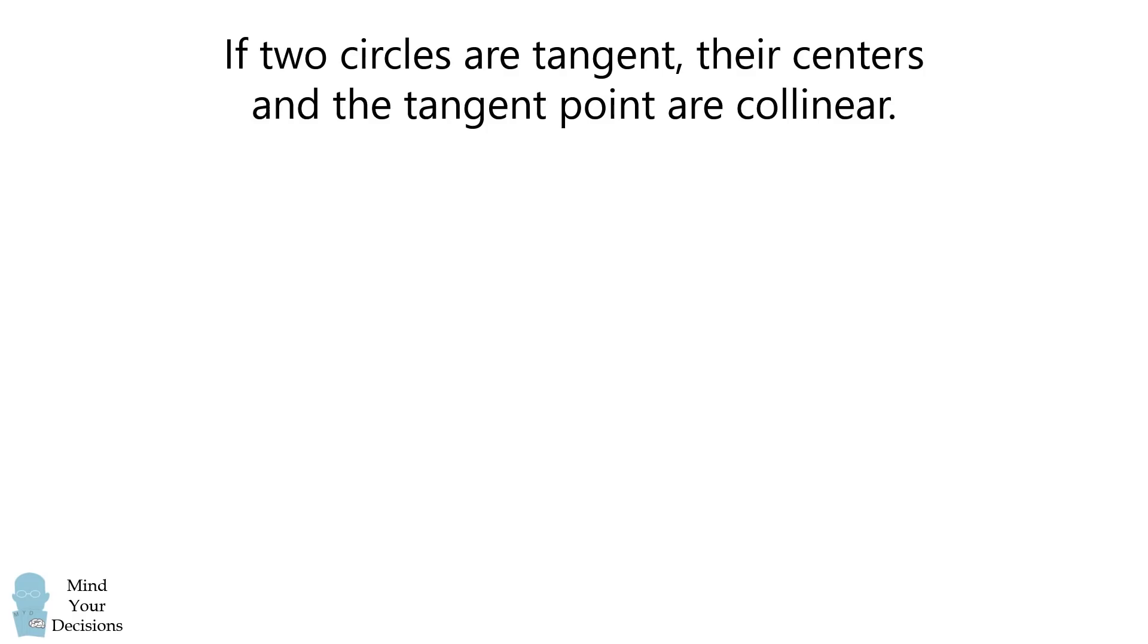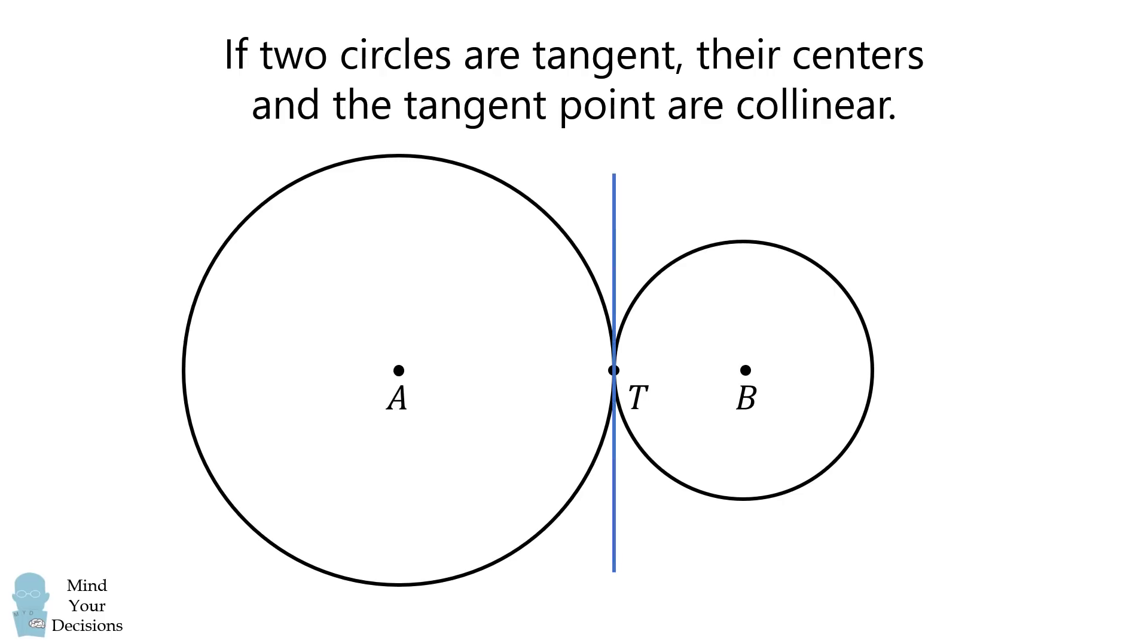Recall, if two circles are tangent, their centers and the tangent point are collinear. Suppose we have circles A and B that are tangent at point T. Construct the tangent line through the point T.